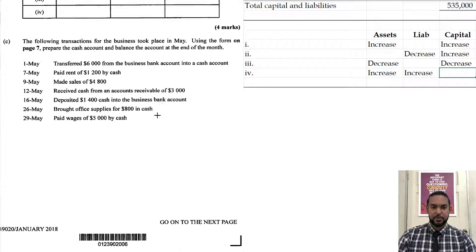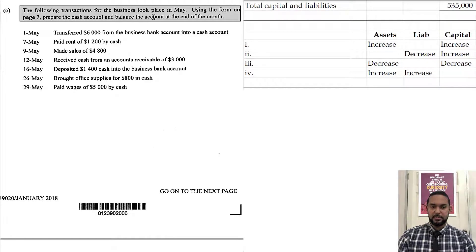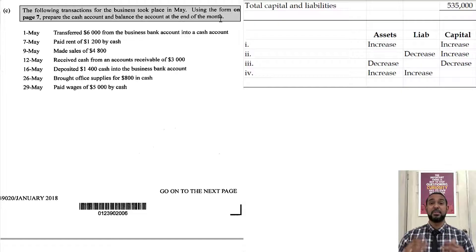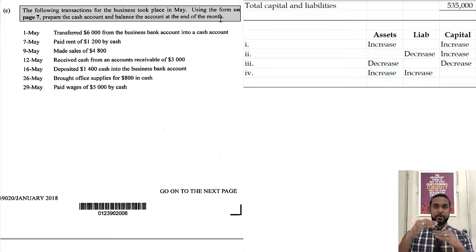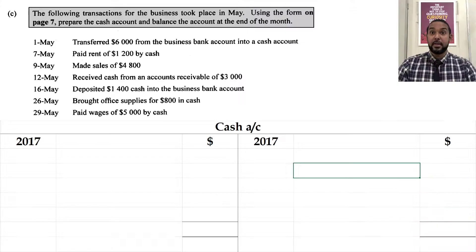For the next question, they want us to do a T-account. It says: the following transactions for the business took place in May. Prepare the cash account and balance the account at the end of the month. So let's take a read of these transactions.